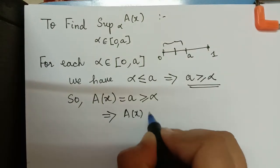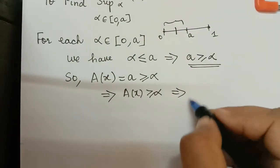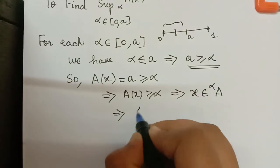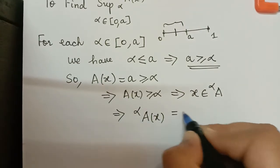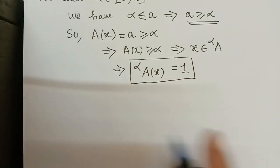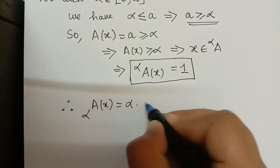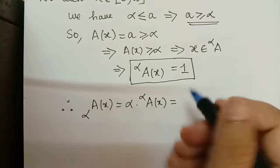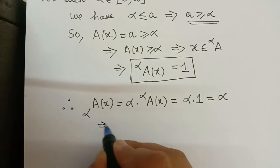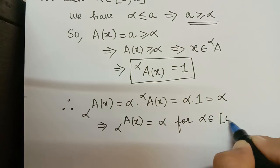Since A(x) ≥ alpha, by the definition of the alpha-cut, x is an element of the alpha-cut of A. Because x is an element, the special membership function αA(x) equals 1. Therefore, the special fuzzy set αA(x) equals alpha multiplied by 1, which equals alpha. This implies αA(x) = alpha for all alpha in the closed interval [0, a].